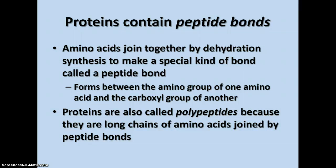The amino acids are joined together by dehydration synthesis to make a special bond called a peptide bond. The peptide bond forms in a similar way as the other types of bonds between other monomers, but in amino acids, since those groups are on the ends of the molecules, the peptide bond forms between the amino group of one amino acid and the carboxyl group of another. Another name for proteins is polypeptides, because they are long chains of amino acids joined together by peptide bonds.